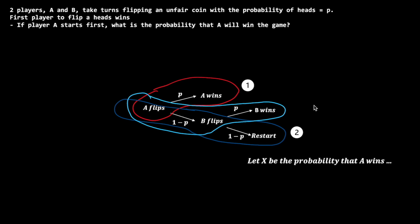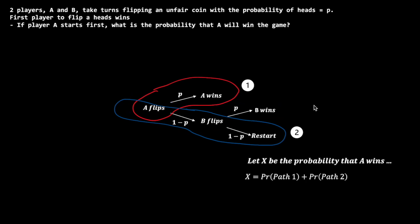There is a third path, but it ends with B winning, and we are not interested in the probability of this outcome, so we ignore it. Because these paths are mutually exclusive events, we can sum them to obtain X. For path 1, the probability is simply P. For path 2, it is the probability that A flips tails, then B flips tails, followed by the probability of A winning — the value of X. Note that no conditional probabilities are needed here, as the coin flips are independent of each other.